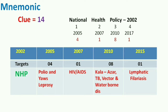There are 14 targets. Both National Health Policy 2002 and National Population Policy 2000 have 14 targets. The targets have to be achieved in four different years: 2005, 2007, 2010, and 2017. The first year 2005 has four targets, 2007 has only one target, 2017 also has one target, but 2010 has eight targets.